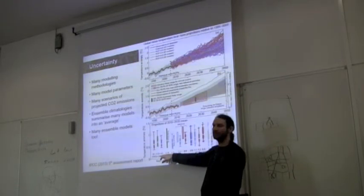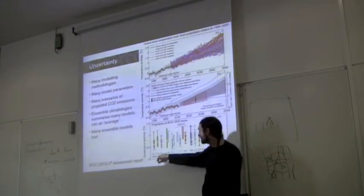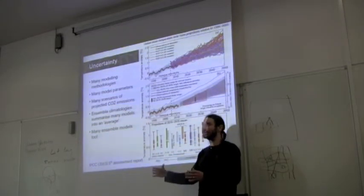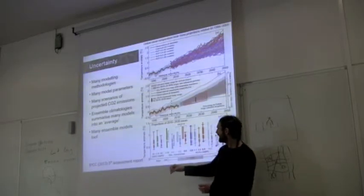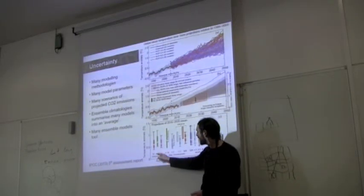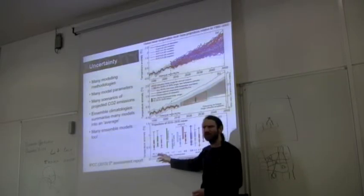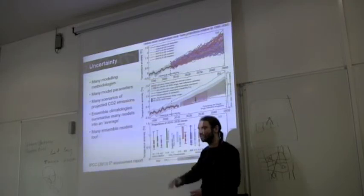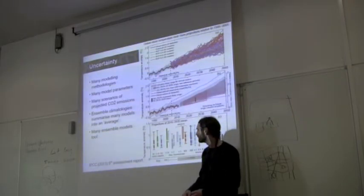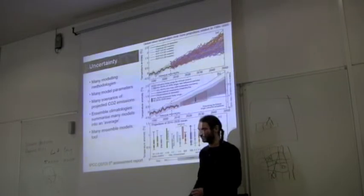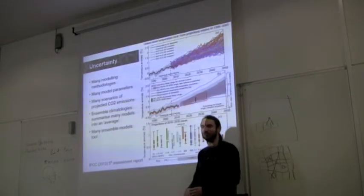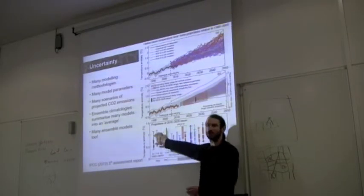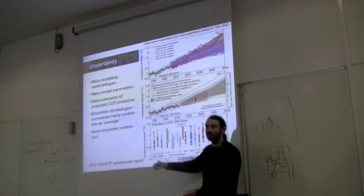B1, A1, A2. And these stand for different emission scenarios. They originally gave them names such as, I think A2 was something like business as usual and B1 was something like everyone, I can't remember what it's called. So, basically everyone stops emitting carbon dioxide right now.